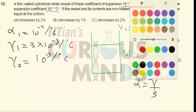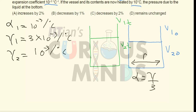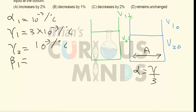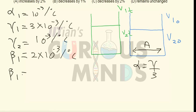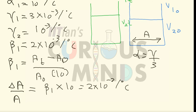To find the increase in area at the bottom, let the original area be A. The areal expansion coefficient β₁ = 2α₁ = 2×10⁻³ per °C. So the percentage change in area at the bottom is ΔA/A = β₁ × ΔT = 2×10⁻³ × 10 = 2×10⁻², meaning the area increases by 2×10⁻² (2%).